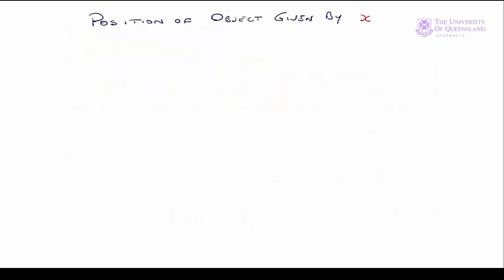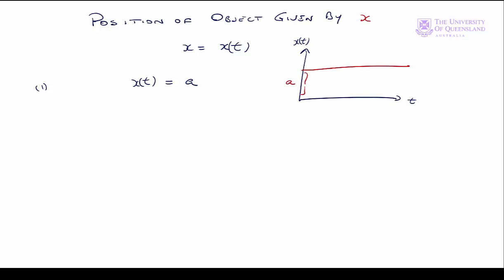We have an object whose position is given by the variable x, where x is a function of time — x equals x of t. We'll look at three cases. The first case: x of t is equal to some constant. Looking at the graph of that, we'll have a horizontal line with intercept a. The first derivative x prime of t is equal to zero — the line is horizontal, so the slope is zero. The second derivative x double prime of t is also equal to zero.